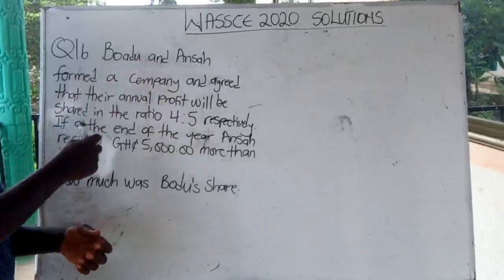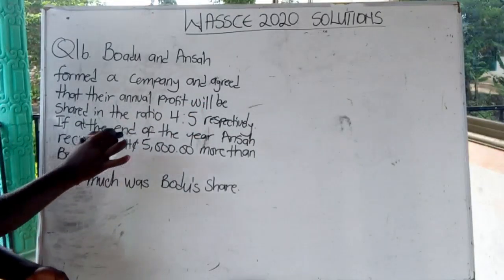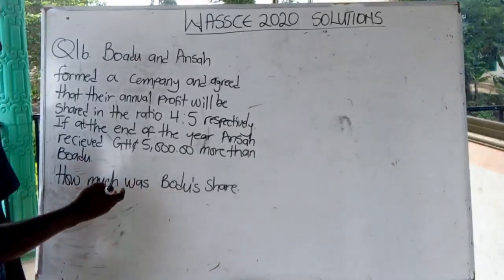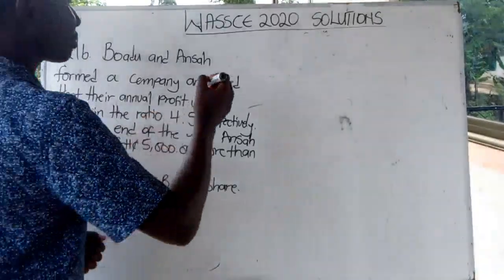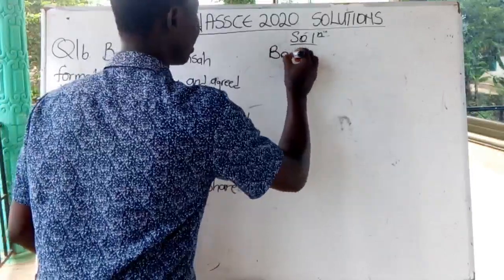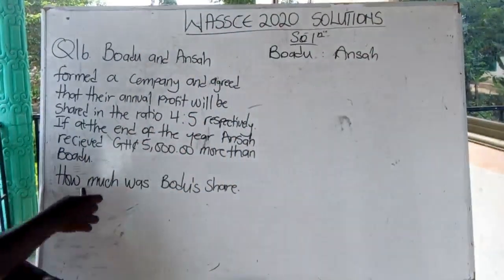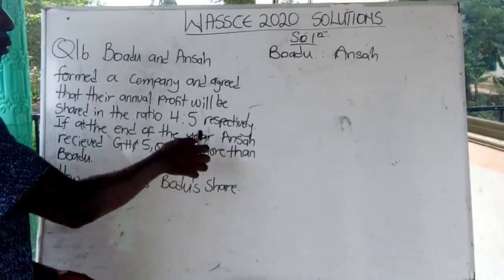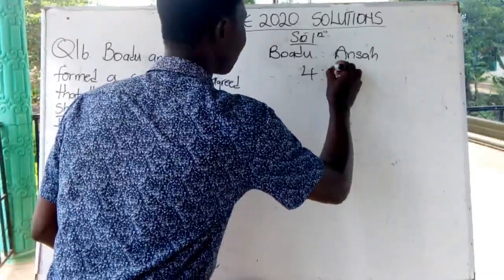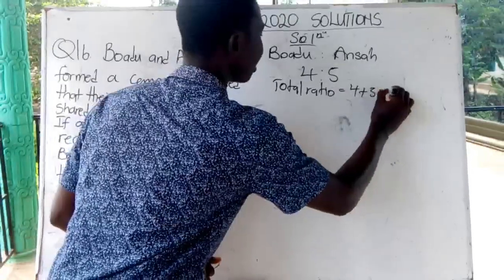Question one b: Ansa and Bodi form a company and agree that the annual profit will be shared in the ratio four to five respectively. If at the end of the year Ansa receives five thousand more than Bodi, how much was Bodi's share? Let's start the solution. Ansa and Bodi form a company and agree to share profit in ratio 4:5, where 4 corresponds to Bodi and 5 to Ansa. Total ratio is 4 + 5 = 9.